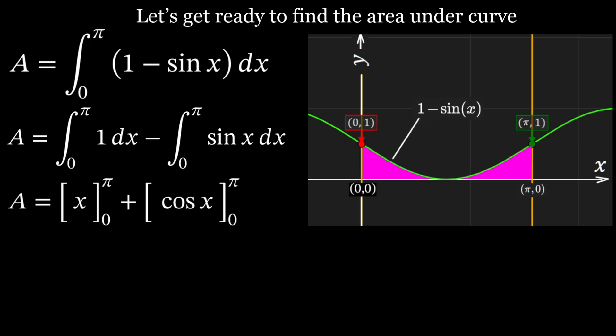That gives A equals x evaluated from zero to pi plus cosine x evaluated from zero to pi. Therefore, upon substituting the upper and lower bounds, area A equals pi minus zero plus cosine pi minus cosine zero.